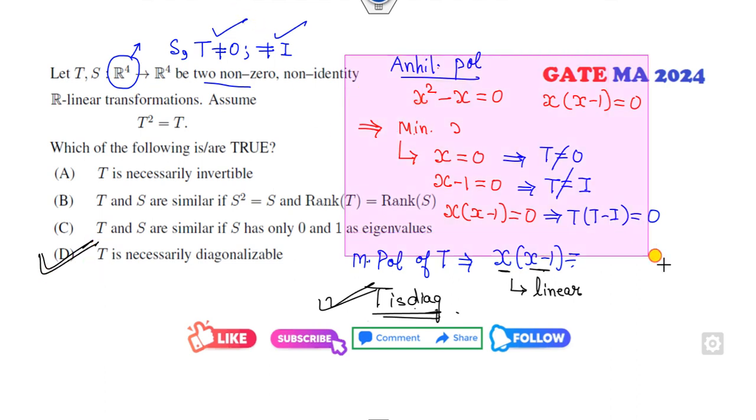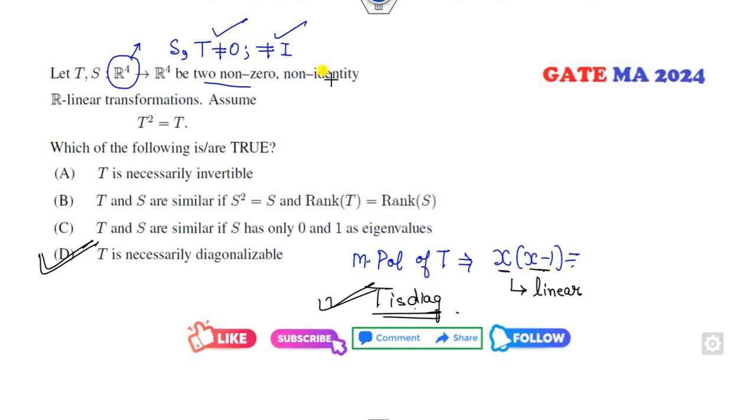Now look at the first option: T is necessarily invertible. Is it possible? No, because this is the annihilating polynomial. If T is I, then clearly this value will be 0. That means this value will not be invertible, so this determinant will be 0. Hence, invertible is not the correct term.